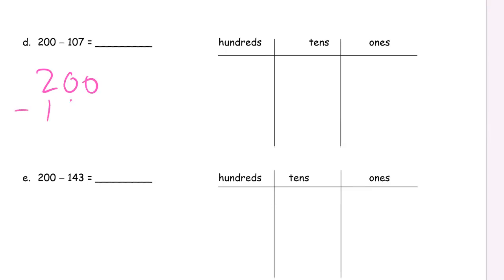200 minus 107. It's going to be a little tricky wrinkle in this one. But you see we need 1s and we don't have any 1s. So we have to unbundle 100. Gives us 10 tens. 9 tens left. For 10 ones. 10 minus 7 is 3. 9 minus 0 is 9. And 100 minus 100. No hundreds left.